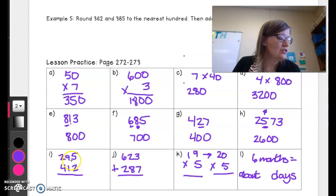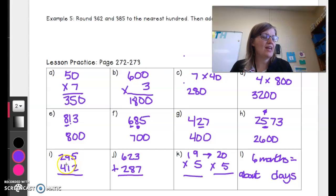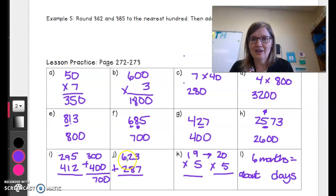They want you to round these numbers to the nearest hundred and then add them. So 295 to the nearest hundred is 300 and 412 to the nearest hundred is 400, and then we are adding these together, 700.